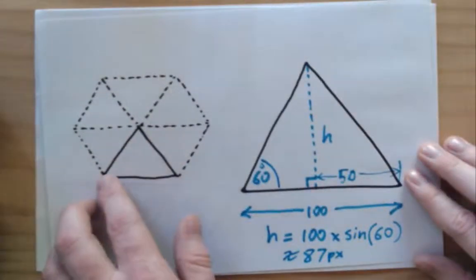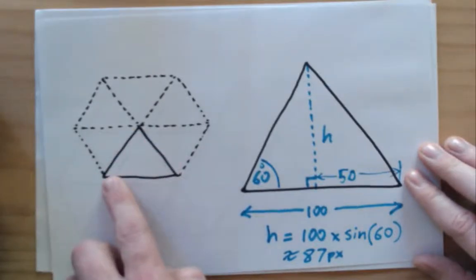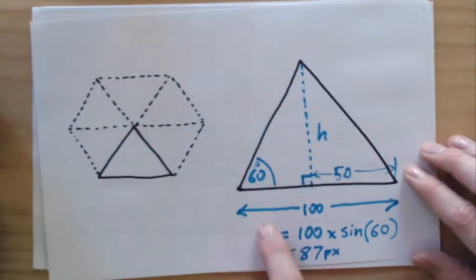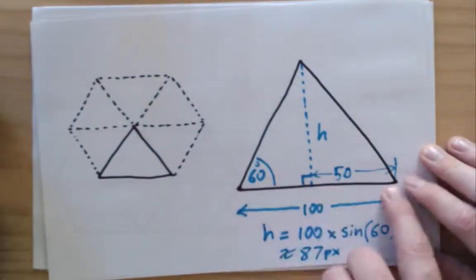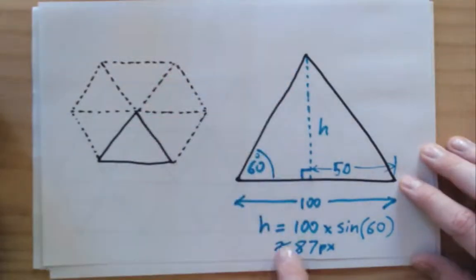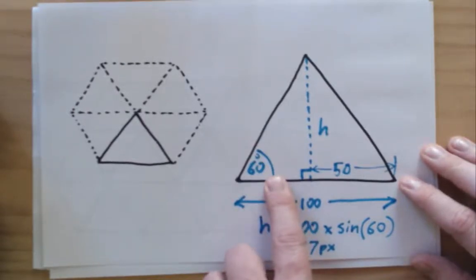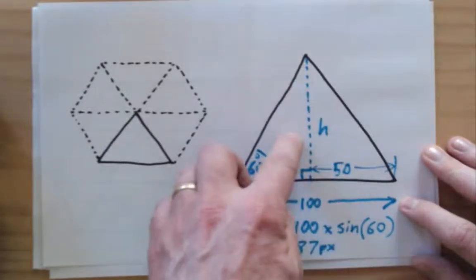First I want to think about each individual base cell that's going to be reflected. I did a little bit of maths and figured out that if the base of the cell is 100 pixels wide, the height is going to be 100 times sine of 60, because it has a 60 degree angle. So the width is 100 and the height is about 87 pixels.